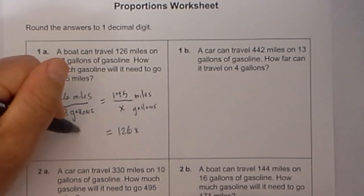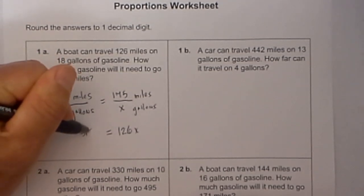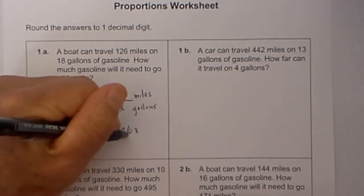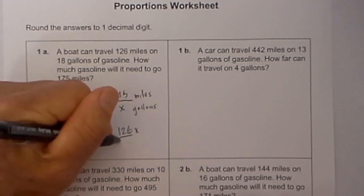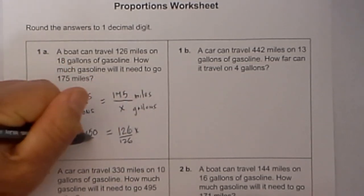175 times 18, I have already done the math, here is 3150. Now I isolate the x by dividing both sides by 126.